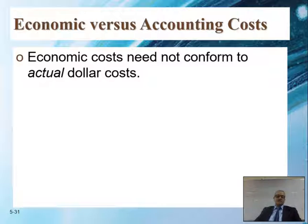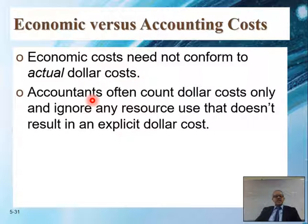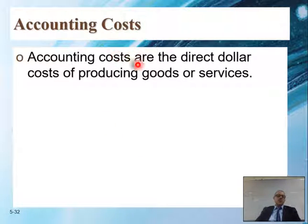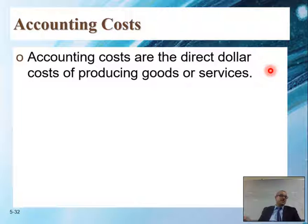Economic costs need not conform to actual dollar amounts. Accountants often count dollars costs only and ignore any resource use that does not result in an explicit dollar cost. Did I pay out $100? No. Accountants will say, 'We didn't pay it, so that's not a cost.' Accounting costs are the direct dollar cost of producing goods or services. If I pay a laborer $85, that's a cost. If I buy lemons or a machine, I have to record it. That's what accountants do — they record.